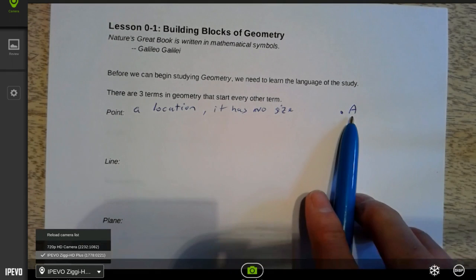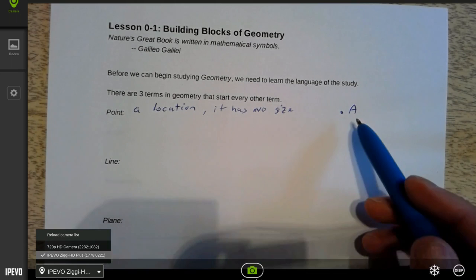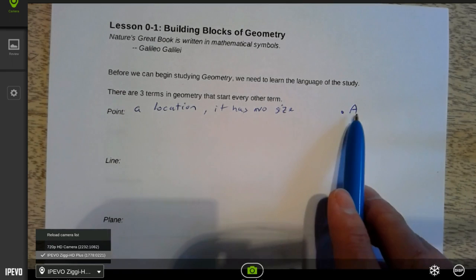We represent a point using a dot, and we always name our points with capital letters. That's just something that's done in all of mathematics. So this would be point A. It's important to know that we always name our points using capital letters.